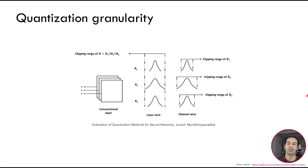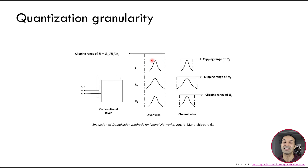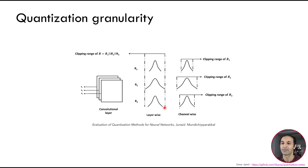Another topic in quantization is granularity, which comes into play with convolutional layers. Convolutional layers are made up of many filters or kernels, each run through the image to calculate specific features. These kernels may have parameters distributed differently — one kernel distributed between minus 5 and plus 5, another between minus 10 and plus 10, another between minus 6 and plus 6. If we use the same alpha and beta for all of them, some kernels will waste their quantization range. In this case it's better to perform channel-wise quantization: for each kernel we calculate a different alpha and beta, resulting in higher quality quantization and less precision loss.